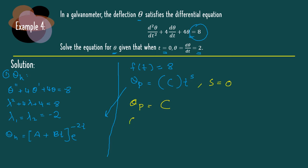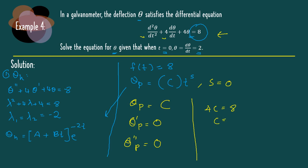Now differentiate twice: theta p prime equals 0, and theta p double prime equals 0 as well. Substituting into the original problem, the first and second derivative terms are both 0. So we just have the last term: 4 theta p, meaning 4c equal to 8. Therefore c equal to 8 over 4 equal to 2, so theta p is equal to 2.